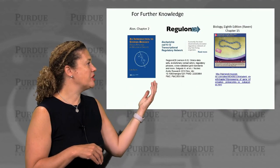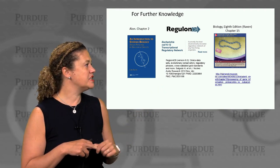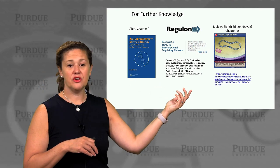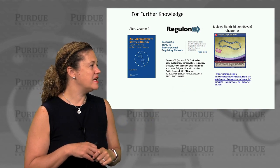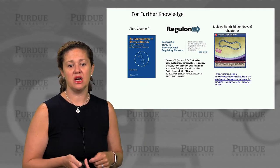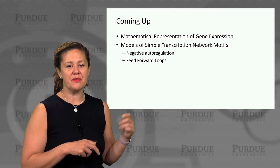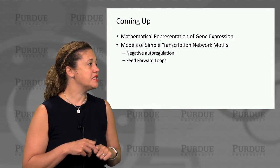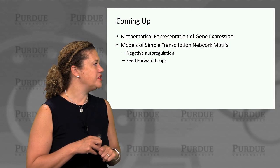For further knowledge, I would point you to Alon's textbook Introduction to Systems Biology, the RegulonDB database accessible free online, and some videos that further exemplify gene expression in prokaryotic and eukaryotic cells. Coming up, we're going to start with a simple mathematical representation of gene expression, then build some simple transcription network motifs that exist in those larger networks, starting with negative autoregulation and feedforward loops.